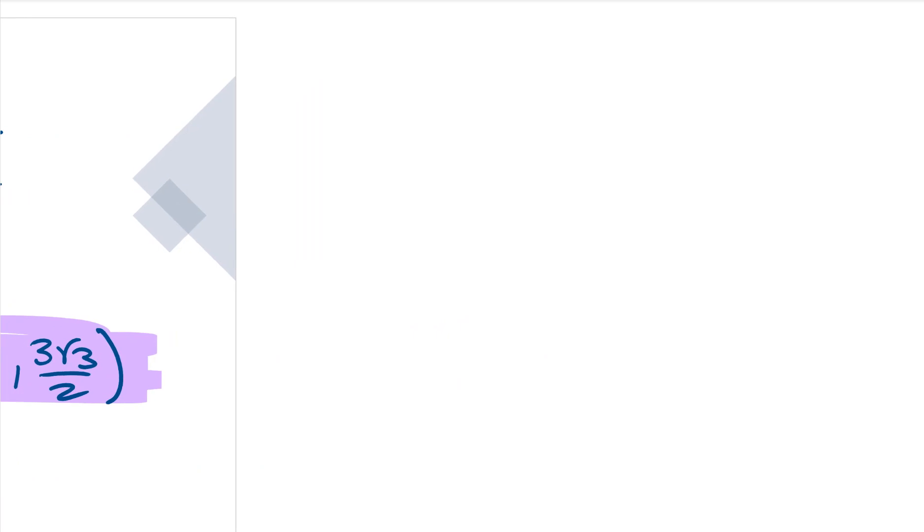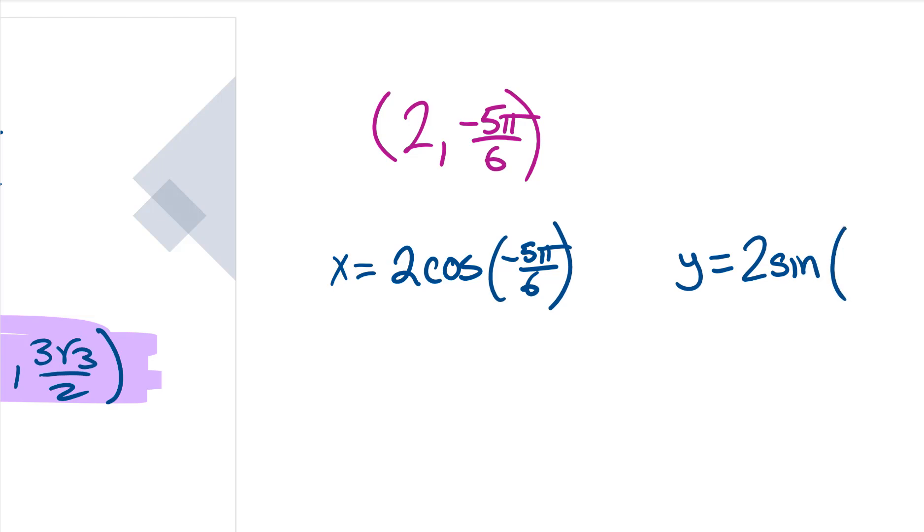Let's do another. Let's say we have (2, -5π/6), and we want to convert that thing. Well, let's think, where would that be? Negative 5π/6 would be going down to the third quadrant. We'd be right there in the third quadrant. So both our x's and our y should be negative. Let's find out. So our x is going to be equal to r times cosine of theta, and our y value is going to be equal to r times sine of theta.